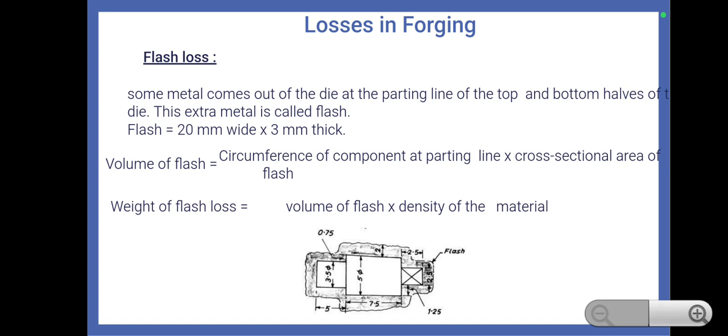The next type of loss is flash loss. When dies are used for forging, certain quantity of material comes out of the die at the parting line of the top and bottom halves of the die. This surplus wastage material is called flash loss.